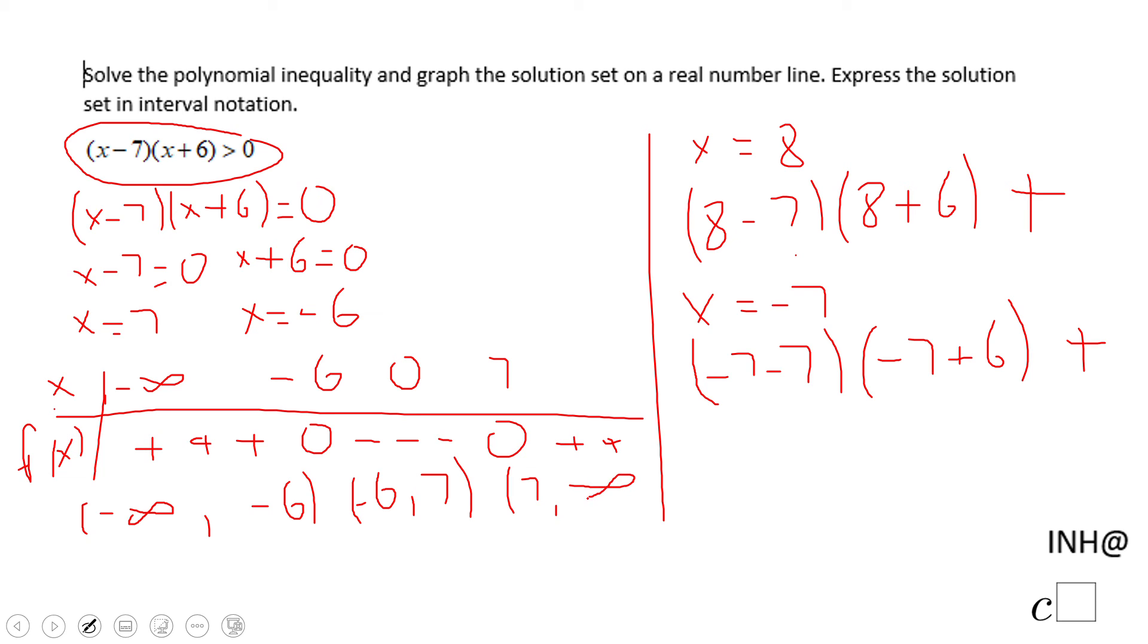These are the solution sets, these are the choices. Since we have greater than zero, the solution sets are going to be the two intervals where it's positive. These two, and eventually you may want to put, if that is needed, the union sign.